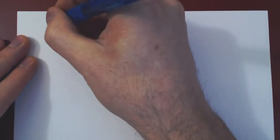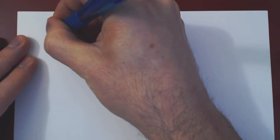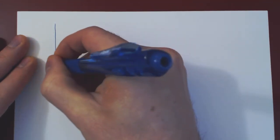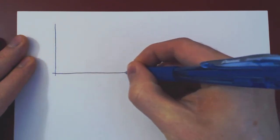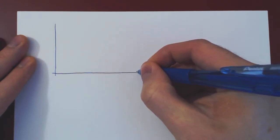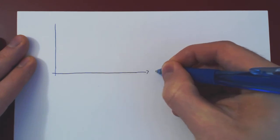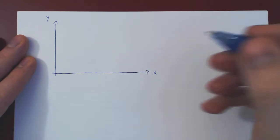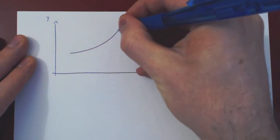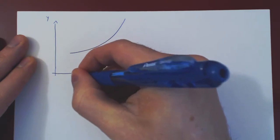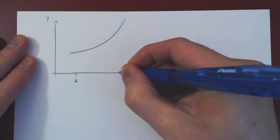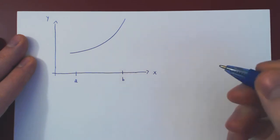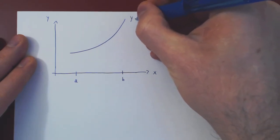In this video, we want to discuss how to find the area below a curve. Suppose that we have the graph of a function, and we'll assume that the function is positive over the given interval. Suppose the function is increasing and concave up. Suppose it looks like this and the interval goes from a to b. This is y equals f of x, our given function.